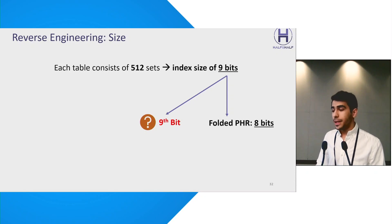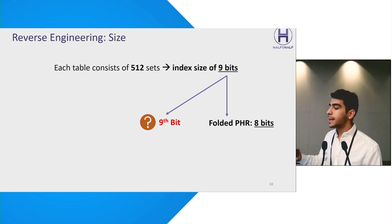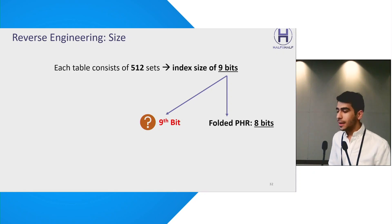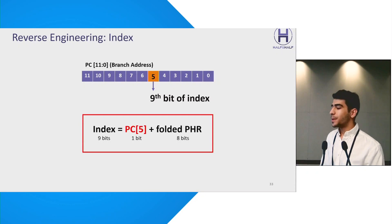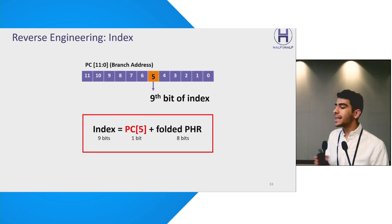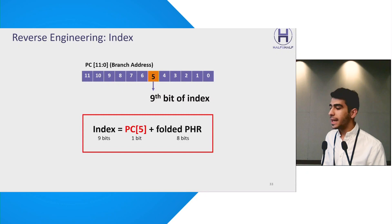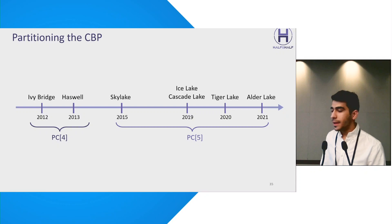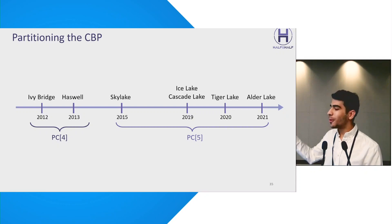Here is the surprising finding in our work. Our experiments revealed that each table consists of 512 sets, indicating a need for a 9-bit index. While 8 bits are derived from the folded PHR, the origin of the 9th bit remained a question. After meticulous experiments on all PC branch address and PHR bits, we found that — beside the PHR — only one bit from the branch address, bit number 5, is used as an index bit independently. This little secret feature can be used to easily partition the branch predictor into two halves. When PC bit 5 is 0, the branch predictor uses the first half of the prediction tables; when PC bit 5 is 1, it uses the second half. In newer machines, bit 5 partitions the branch predictor, while older machines use bit 4.